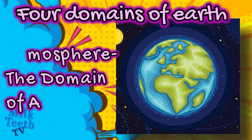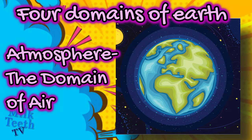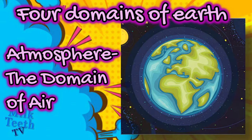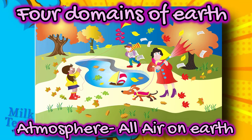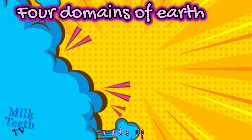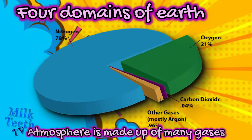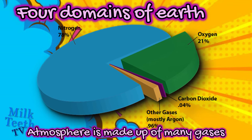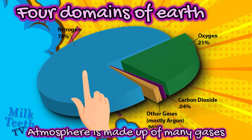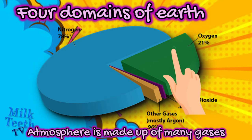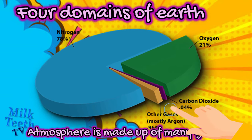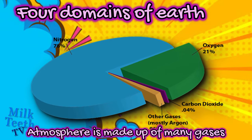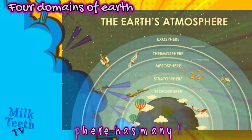Moving on to the third domain of Earth, which is the atmosphere — the domain of air on Earth. The air around us and our planet is called the atmosphere. The atmosphere of the Earth is made up of about 78 percent nitrogen gas, 21 percent oxygen gas that all living beings breathe, and one percent of other gases like carbon dioxide.